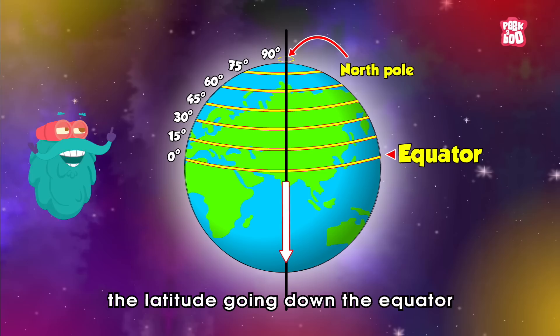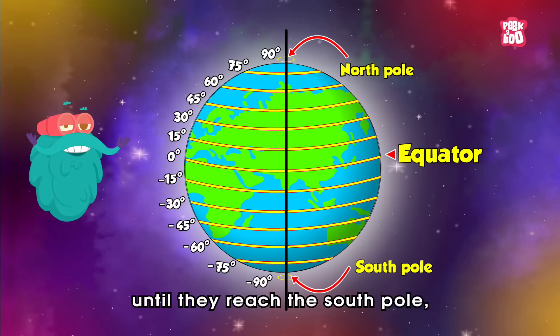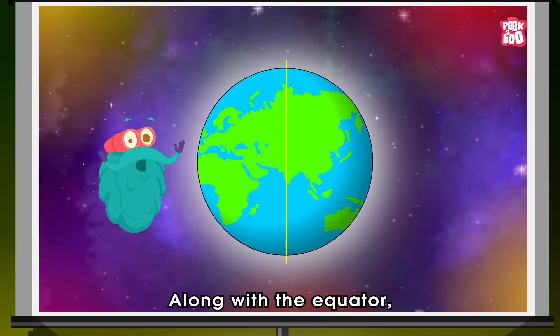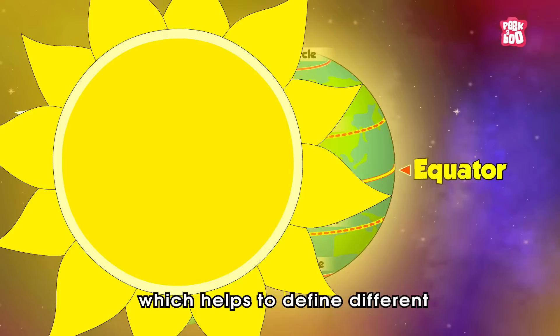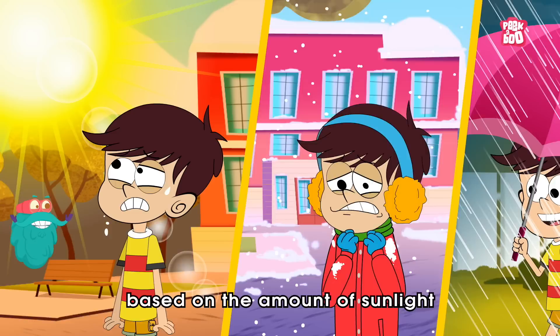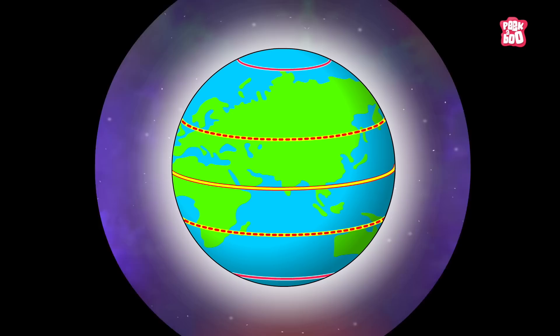On the other hand, the latitude going down from the equator is marked in negative numbers until reaching the south pole, which is numbered as minus 90 degrees. Along with the equator, the other important latitudes are the Tropic of Cancer, the Tropic of Capricorn, the Arctic Circle, and the Antarctic Circle, which help define different climate zones of the world based on the amount of sunlight a region receives throughout the year.